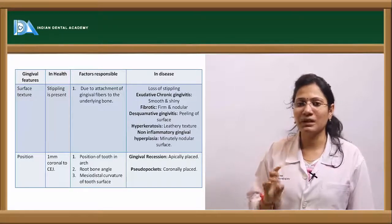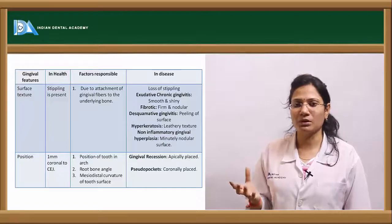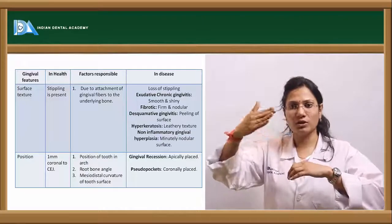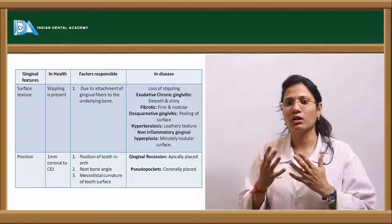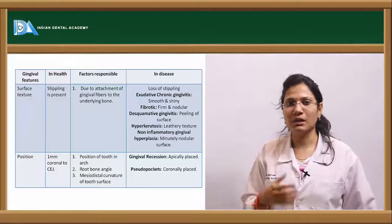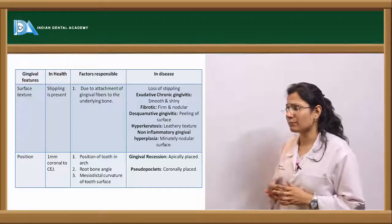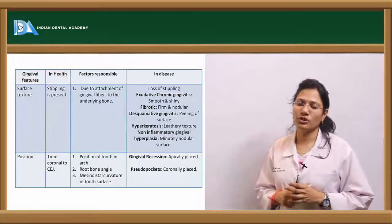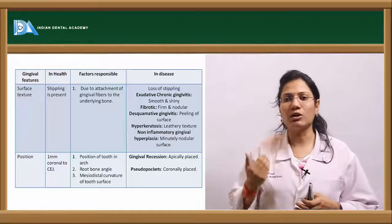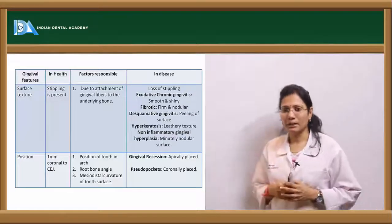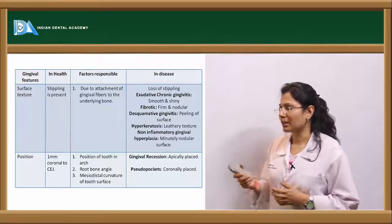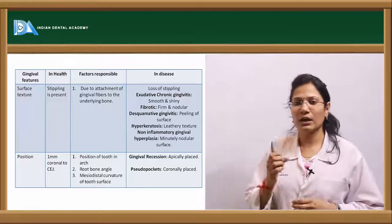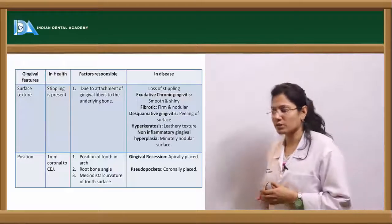Stippling has been compared to an orange peel appearance — you have elevations and depressions in a similar pattern to the peel of an orange. In fibrotic gingival enlargement, the surface texture is firm and nodular. In desquamative gingivitis, there is complete peeling of the epithelium, exposing the underlying connective tissue. In hyperkeratotic conditions, there is a leathery texture. In non-inflammatory gingival hyperplasia, you can have a slightly nodular surface texture. Stippling is absent in infants, appears at age 5, increases till adulthood, and decreases at old age.